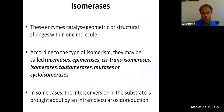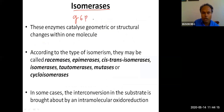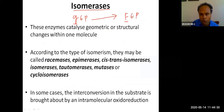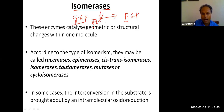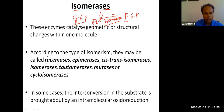Now let's talk about isomerases. Isomerases convert one compound into another compound that is an isomer of it. For example, glucose-6-phosphate is converted into fructose-6-phosphate. Glucose and fructose both have six carbons and are isomers of each other. The enzyme that catalyzes this conversion is an isomerase.